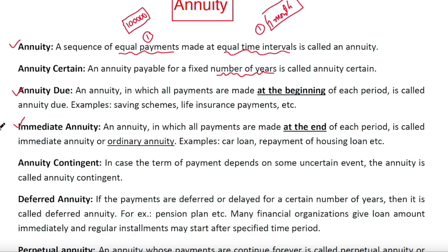Immediate annuity is also known as ordinary annuity and is the most realistic one in most cases, because payments are made at the end of each time period. However, in the case of annuity due, payments are made at the beginning of each time period.